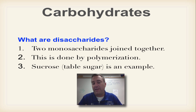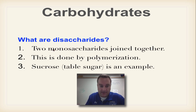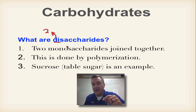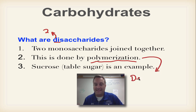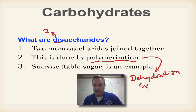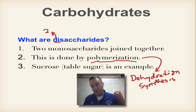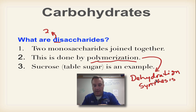A disaccharide — the prefix di simply means two, like in dimer — would be two monosaccharides connected together. This is done through a process called polymerization, also known as dehydration synthesis. Dehydration means to take out the water, and synthesis means to make. So when you take out the water, two things are going to be put together. Sucrose is a disaccharide.